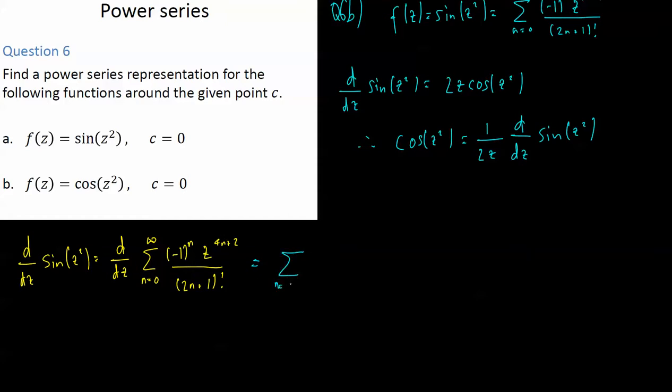So it's n equals 0 to infinity, (-1)^n stays the same. I get a (4n+2) here times z^(4n+1) because I subtract 1 from the power. (2n+1) is just a constant factorial, it's just a constant so that stays the same.